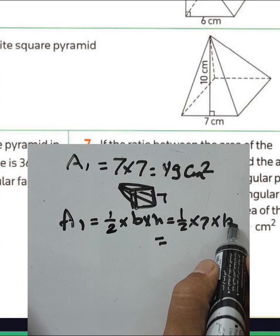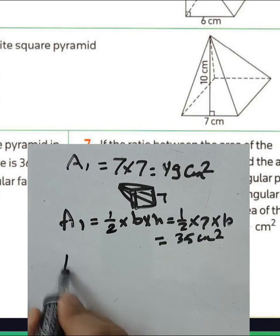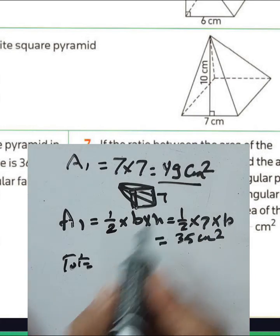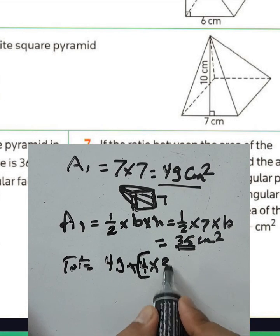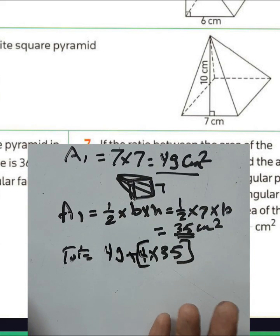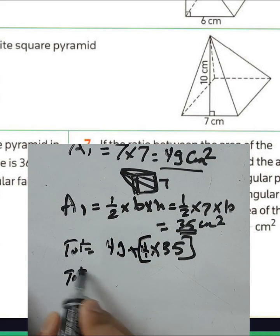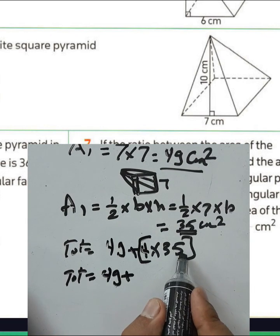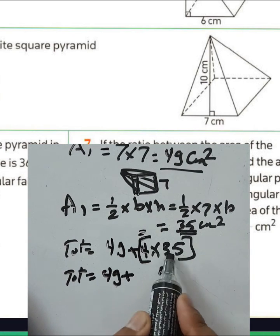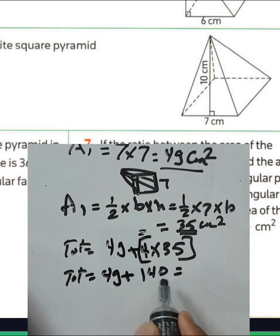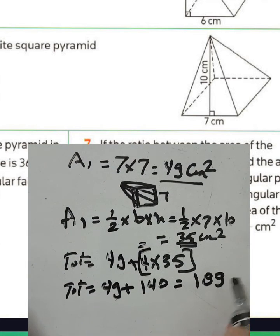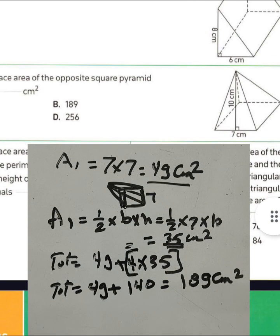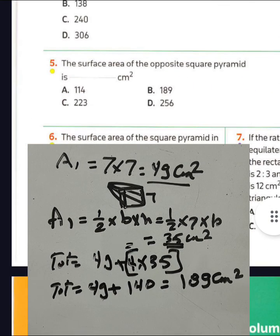The area of each triangle is one-half times seven times the height, giving 35 square centimeters per triangle. The total surface area is the area of the base plus four times the area of each triangle: 49 plus four times 35 equals 49 plus 140 equals 189 square centimeters. Choose letter B for question number five.